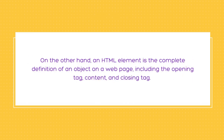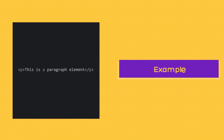On the other hand, an HTML element is a complete definition of an object on the web page, including the opening tag, the content, and the closing tag. An HTML element can consist of multiple HTML tags as well as any text, images, or other content enclosed within those tags. So while the p tag is an individual HTML tag, the complete p element is composed of both the opening p tag, the paragraph content, and the closing p tag.